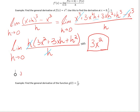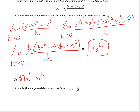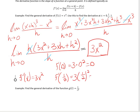Since our derivative function is f prime of x equals 3x squared, to find the derivative at the points 0, one half, and 1, we just plug those values in for x. f prime of 0 equals 3 times 0 squared, which gives us 0. f prime of one half equals 3 times one half squared, which gives us three fourths. And f prime of 1 equals 3 times 1 squared, which gives us 3.